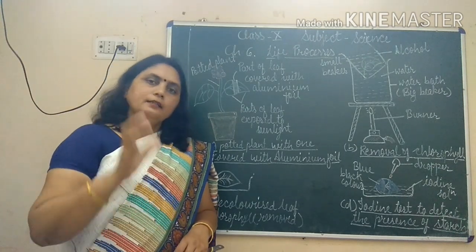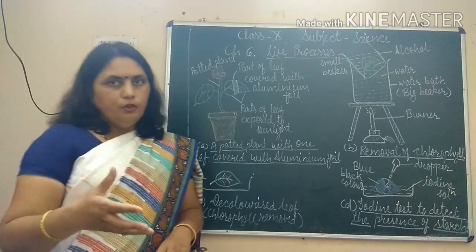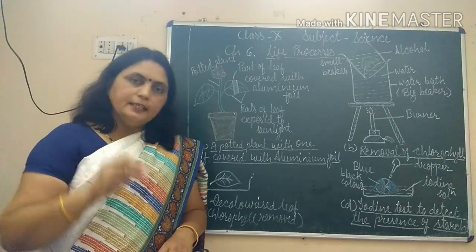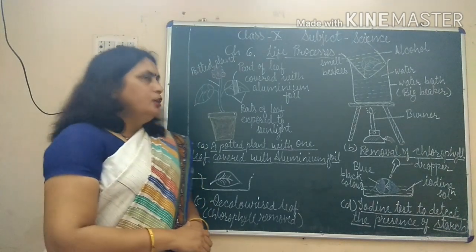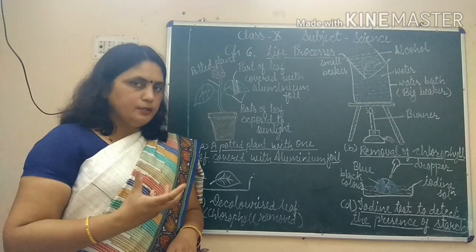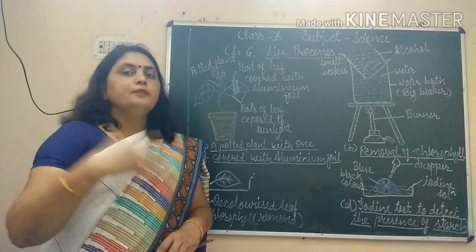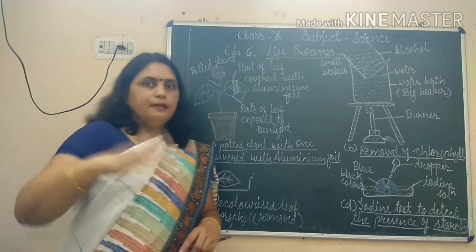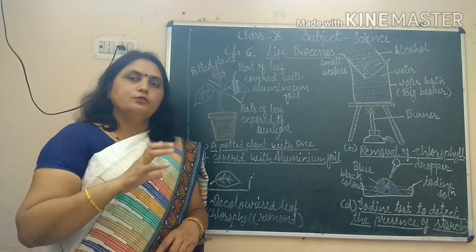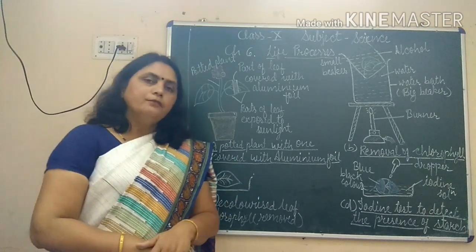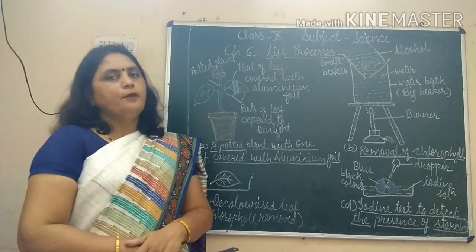The plant generates energy by burning glucose for all these processes. The whole amount of glucose formed cannot be used immediately; there will be some extra amount left after utilizing it for various activities. That extra glucose is stored in the plant in its various parts in the form of starch.